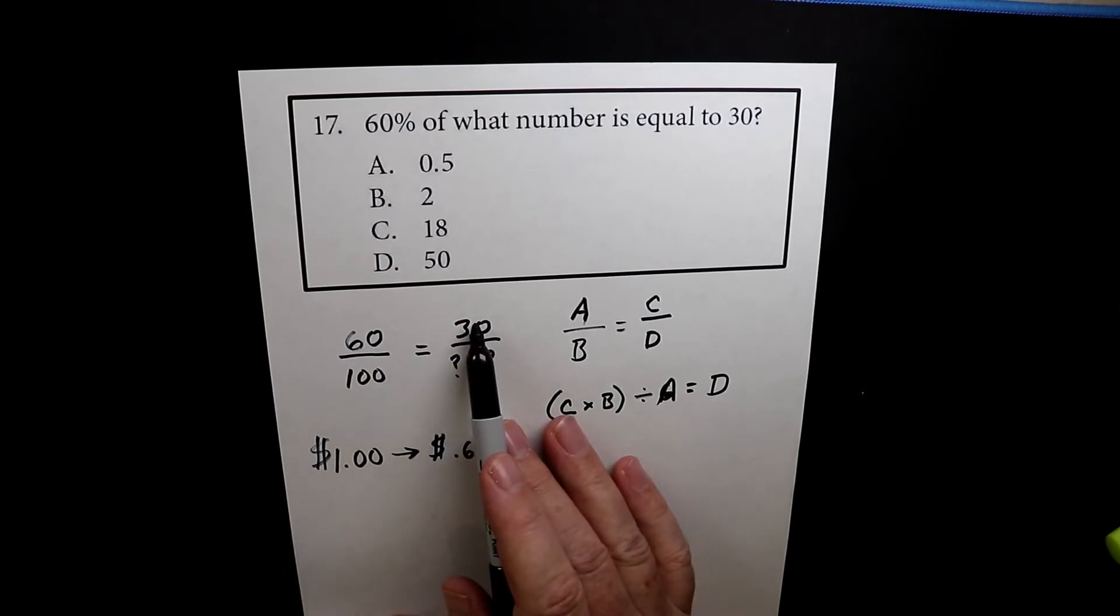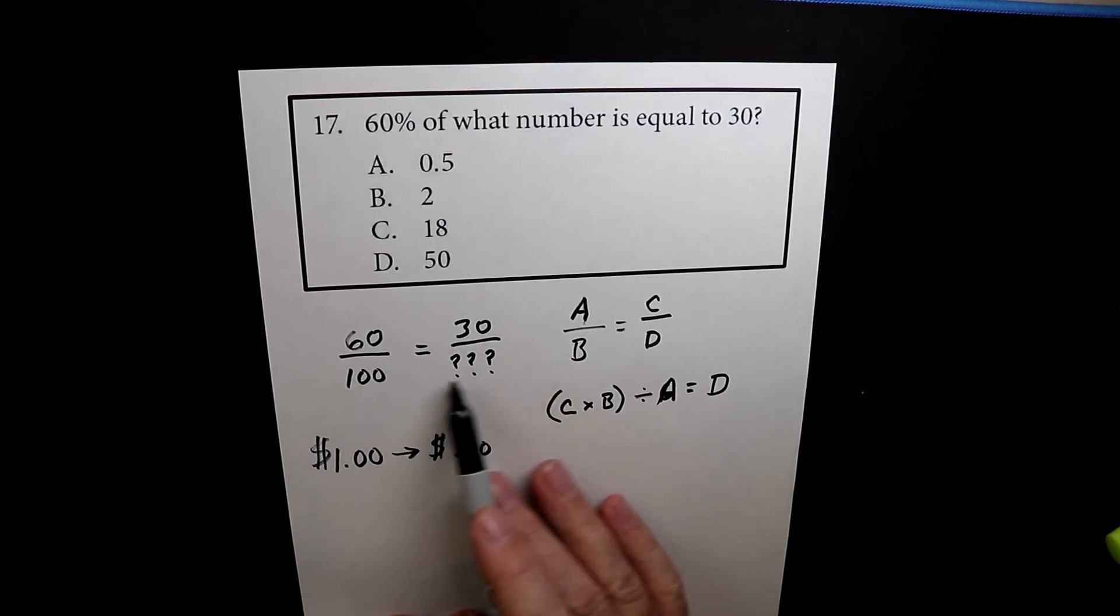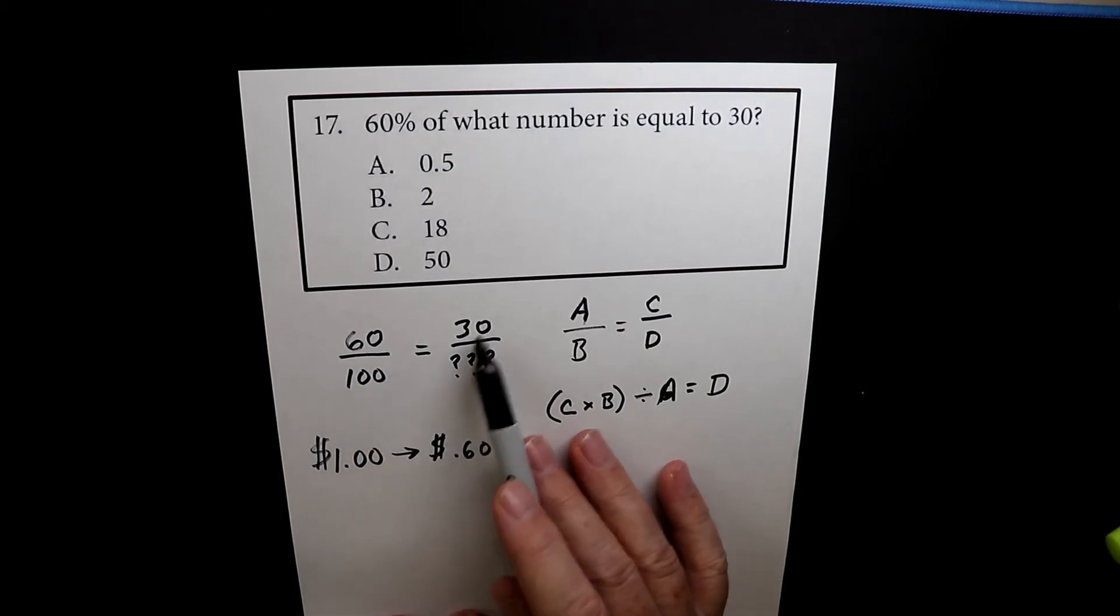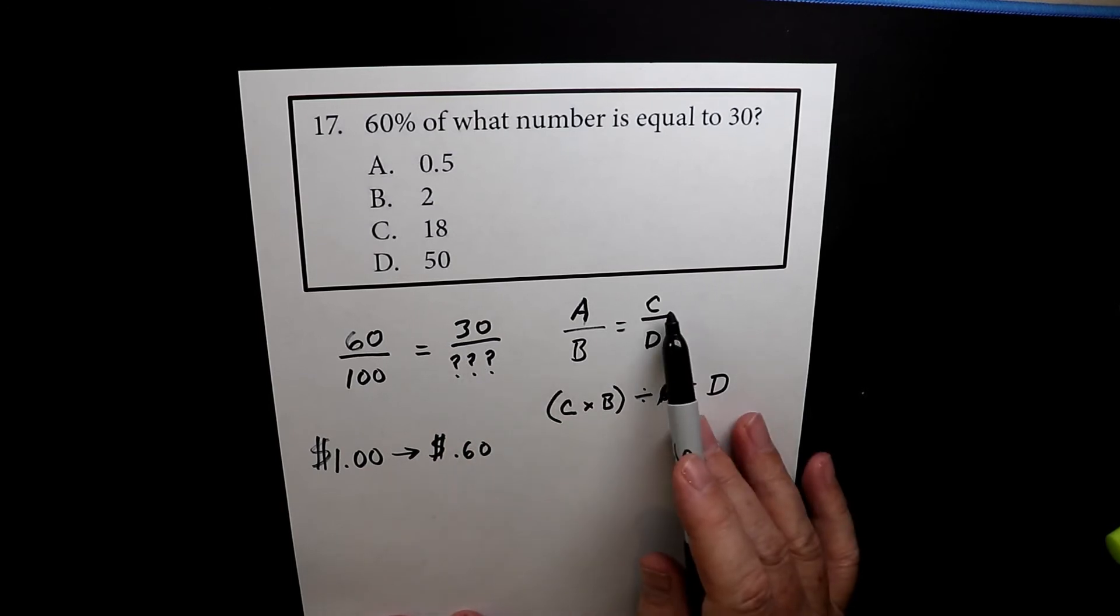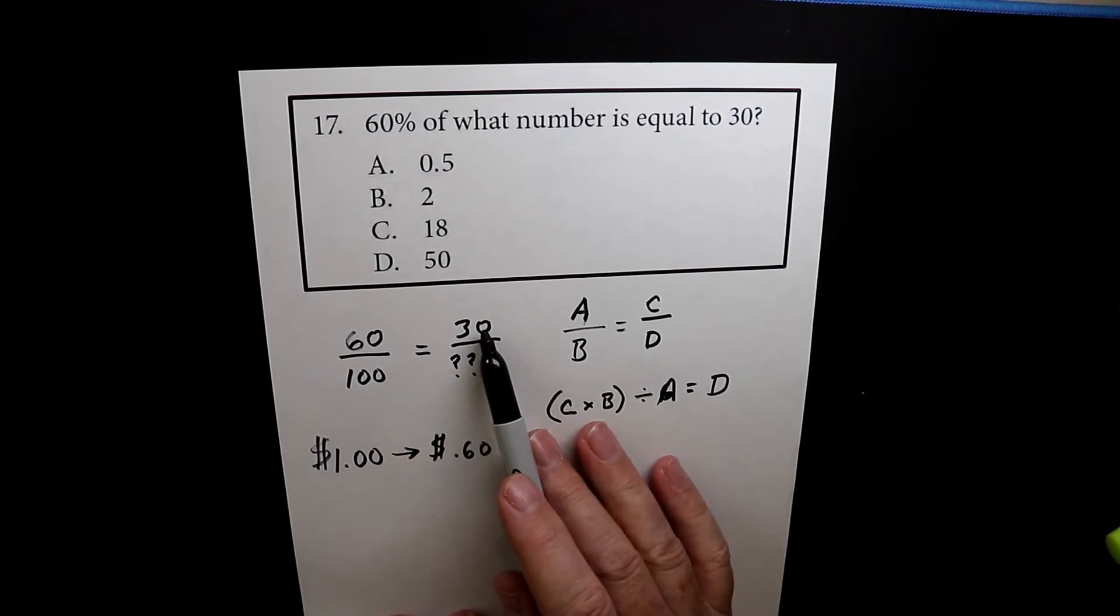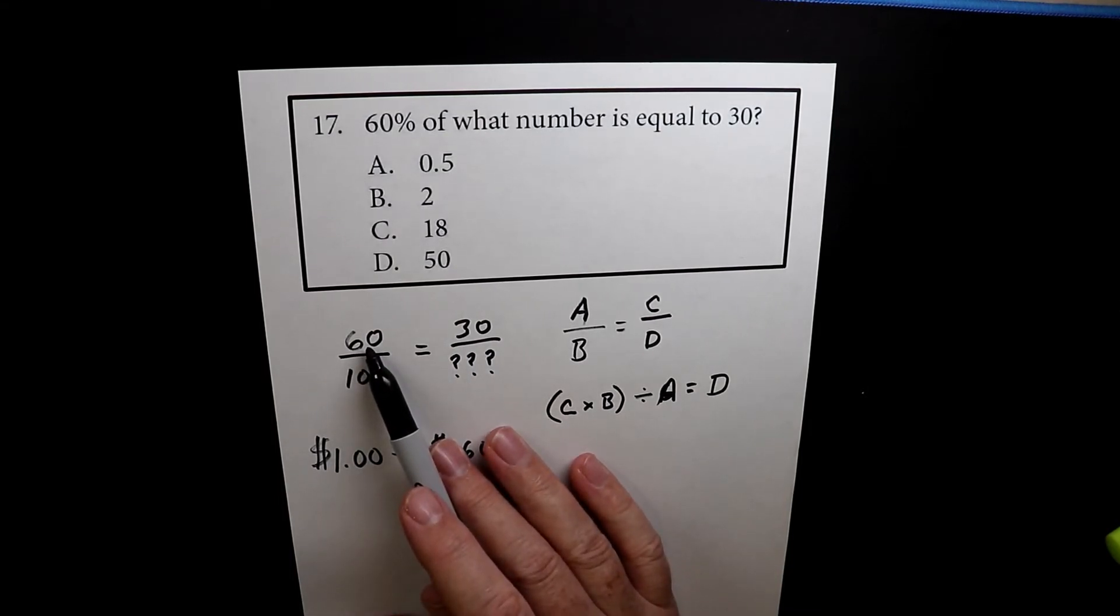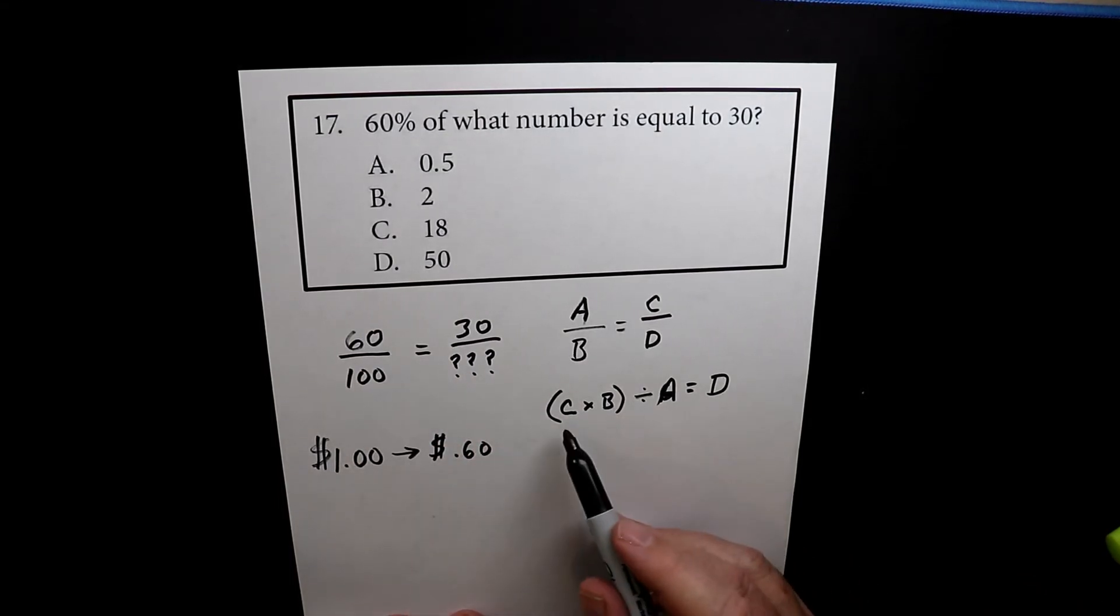So A, B, C, D. Now these can change. You might not know this one, you might not know this one, and then you would flip it around. So you take the two that you know and you multiply them. In this case it's B and C. So you can multiply those two. And then the one that's left is the one you divide by.